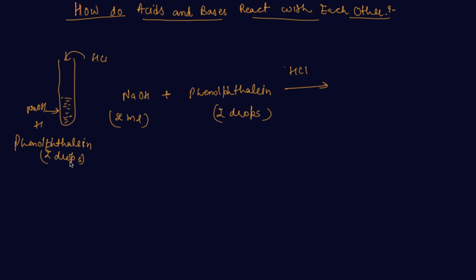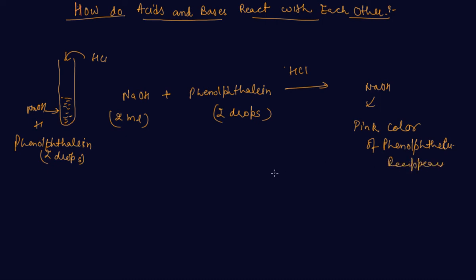After adding HCl acid, the color of the solution changes. Now add some NaOH again to the solution, and you will see that the pink color of phenolphthalein reappears. So what is the reaction basically taking place? When a base reacts with an acid, it forms a salt and water.